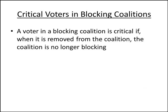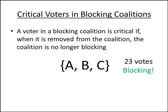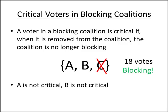We can also consider critical voters in blocking coalitions. A voter in a blocking coalition is critical if, when it is removed, the coalition is no longer blocking. Consider the blocking coalition with A, B, and C having 23 votes — well more than the 12 needed to block. If we remove A, we still have 13 votes, still enough to block, so A is not critical. If we remove B, we have 15 votes remaining — still enough to block, so B is not critical. If we remove C, we have 18 votes remaining — still enough to block, so C is not critical. In fact, none of the voters in this coalition are critical voters.